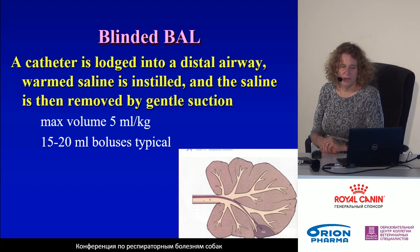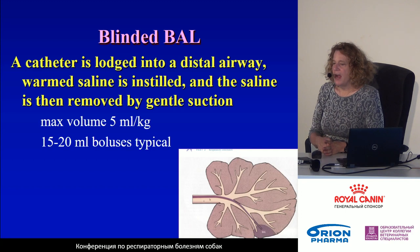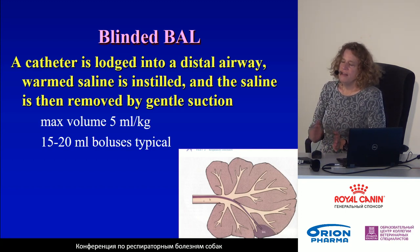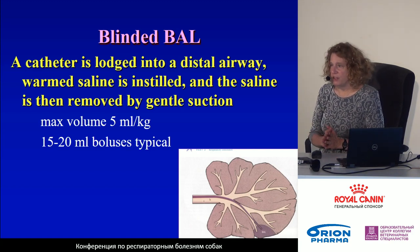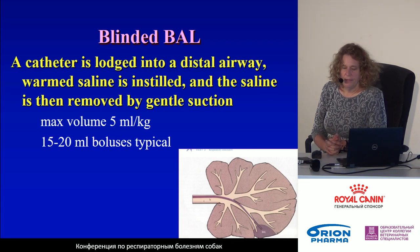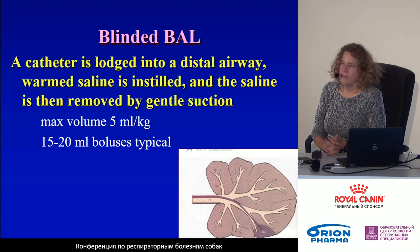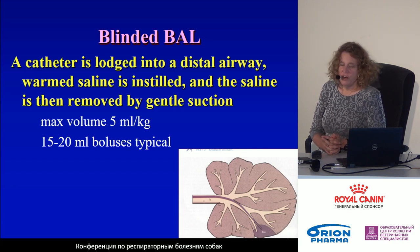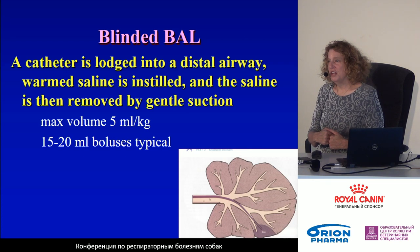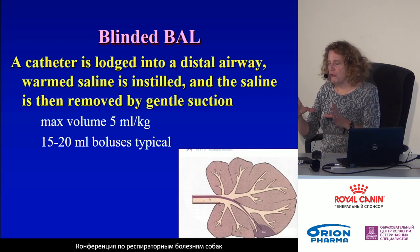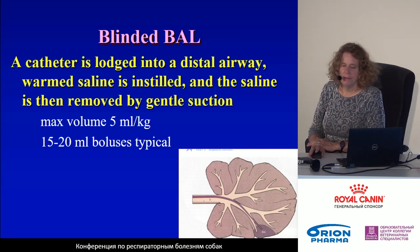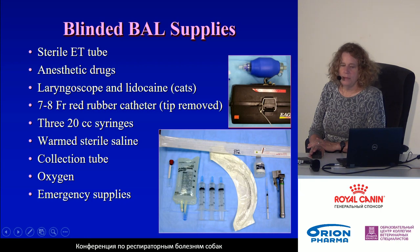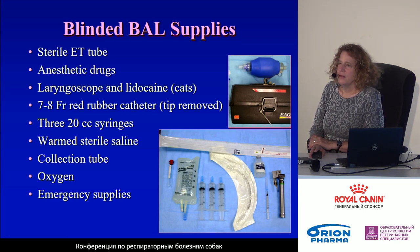Typically, whether it's a dog or a cat, I will use a 15 to 20 milliliter bolus initially. That dose can be repeated provided it does not exceed 5 milliliters per kilogram. For very small cats or very small dogs I may use less than 15 milliliters, but typically even for a small toy poodle I still use 15 milliliters.